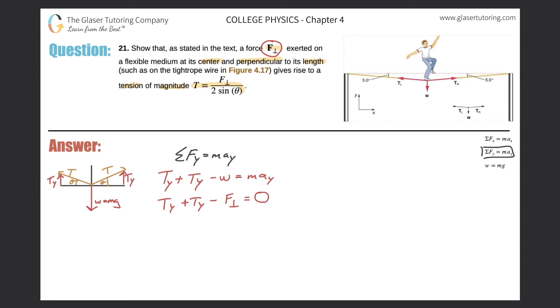So let's combine the two terms. We got 2*T_y, and then add over the force perpendicular to the right hand side, so that equals F perpendicular. Now we're almost there, but I don't want a formula that involves the tension in the y dimension. I want to get a formula that involves the tension overall.